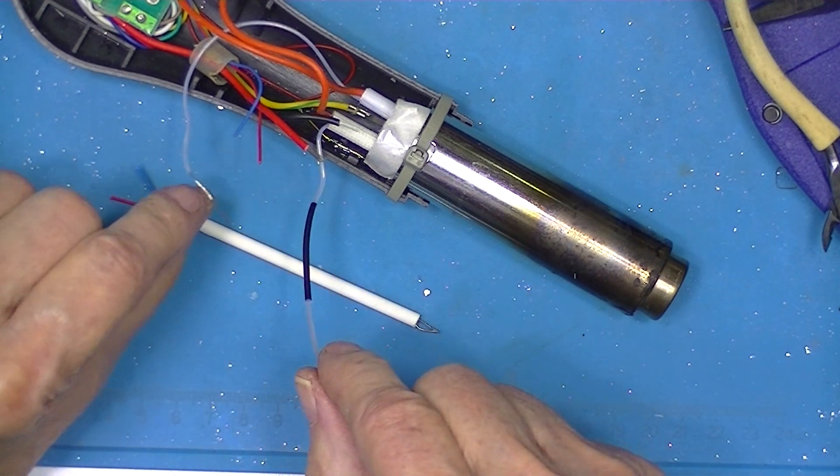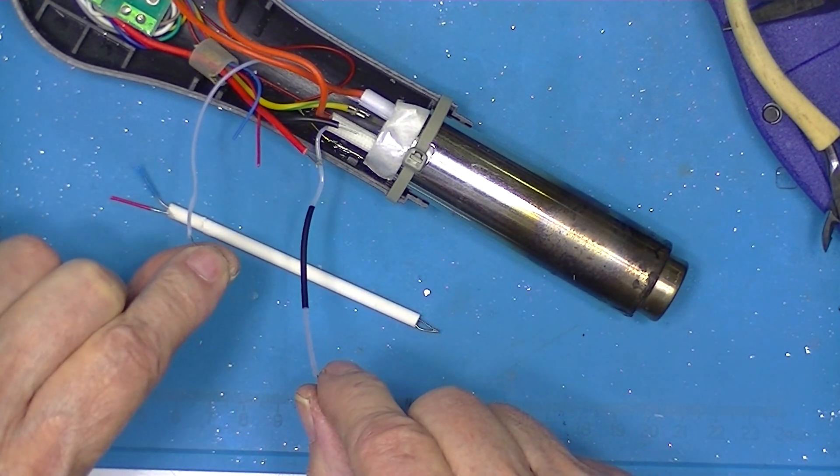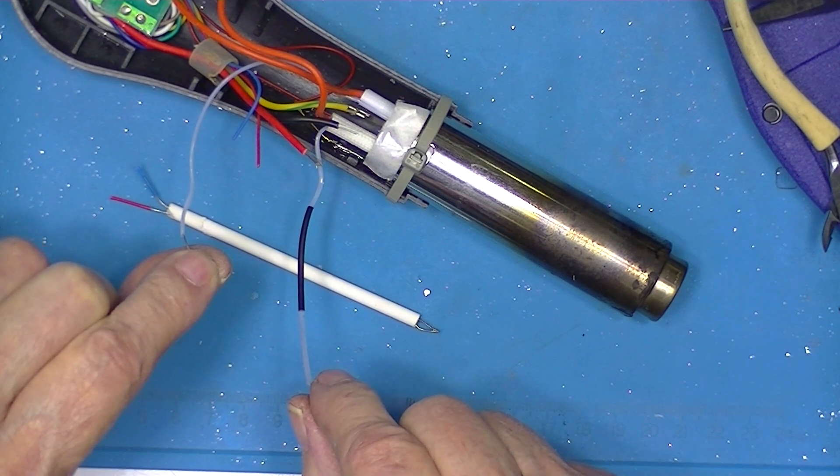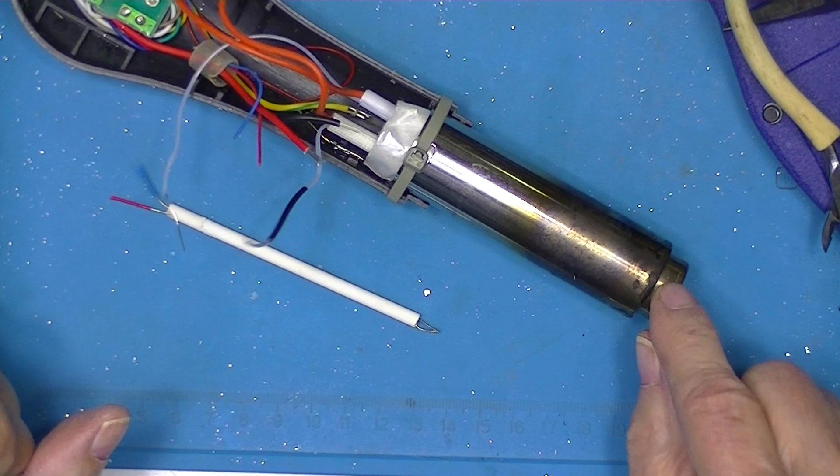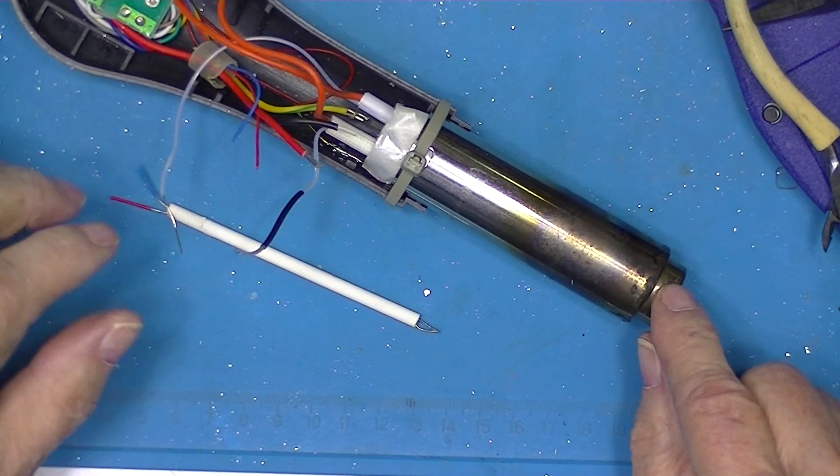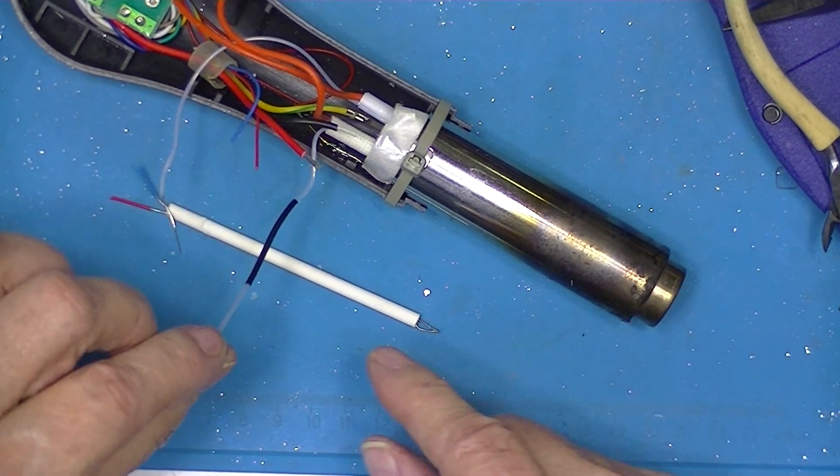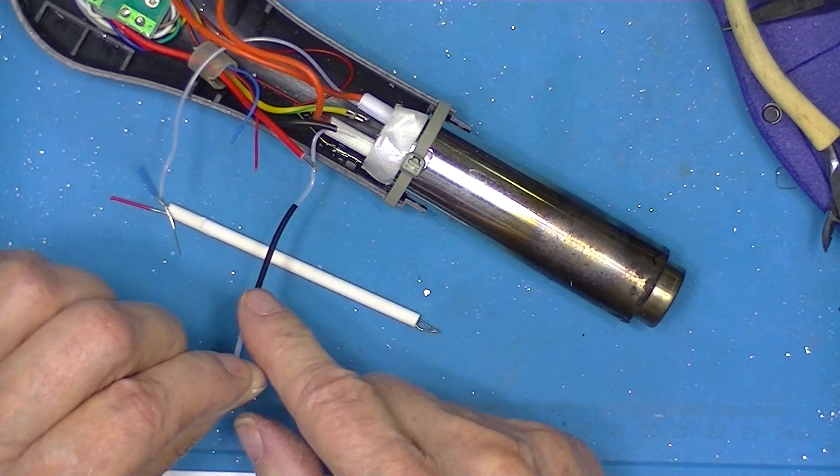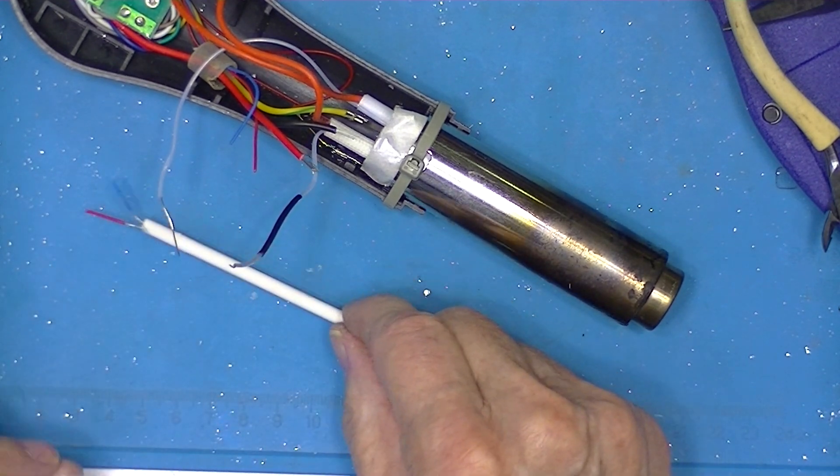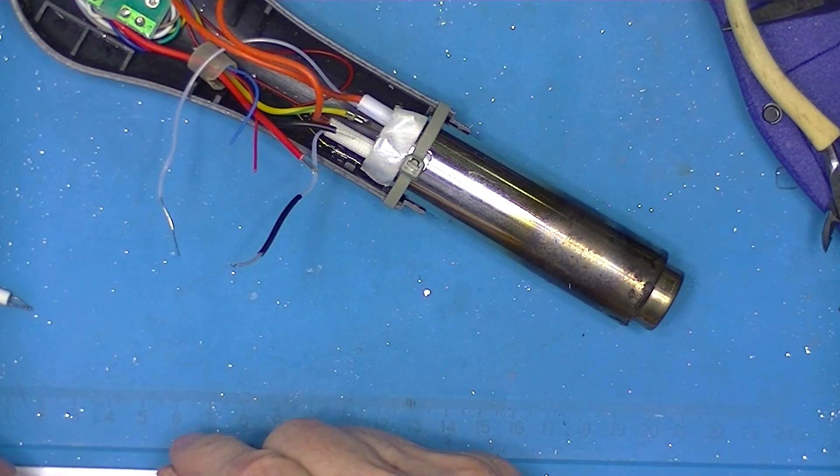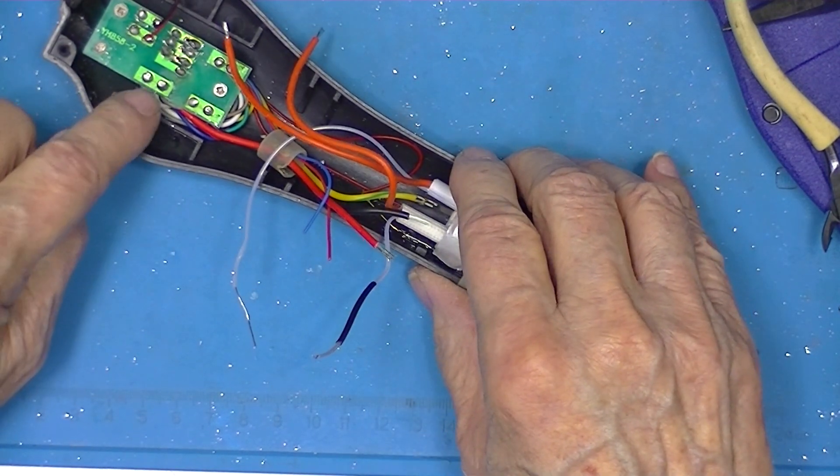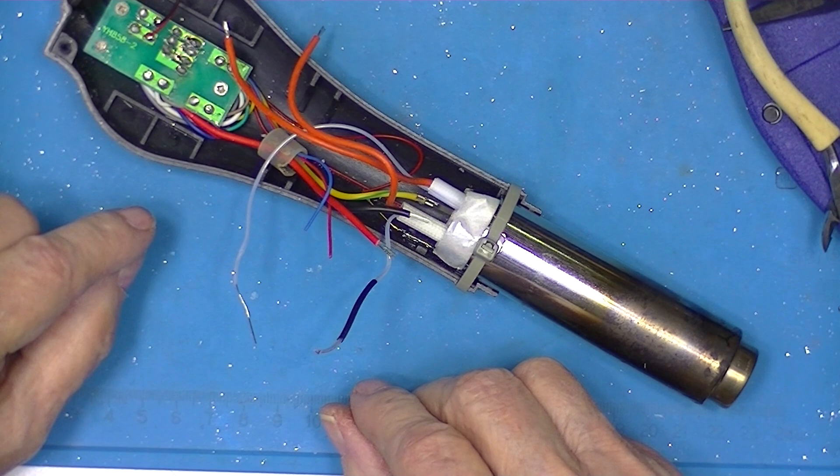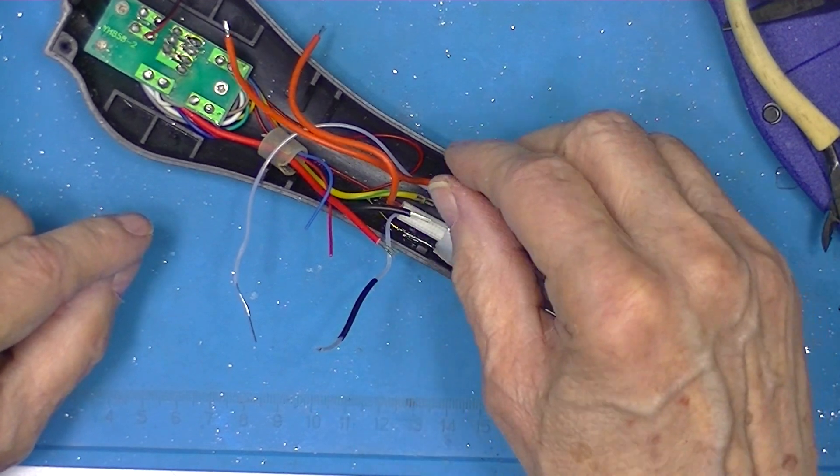Because these wires are not color coded, I did the same thing to the bead at the end of this and I determined and marked this as being the black wire. Now I don't know if I should carry these back to the board or not.